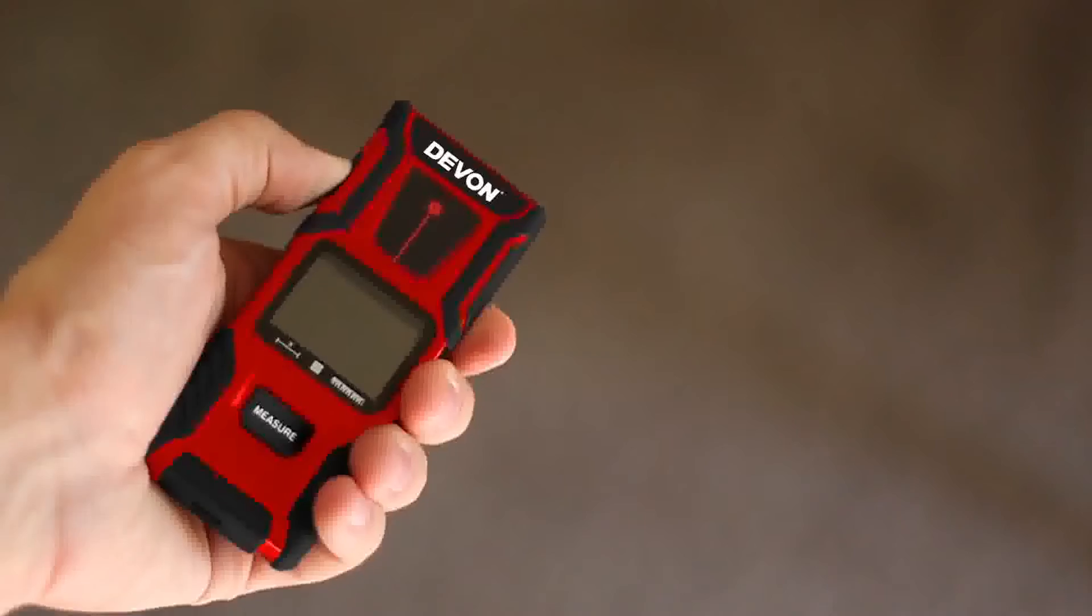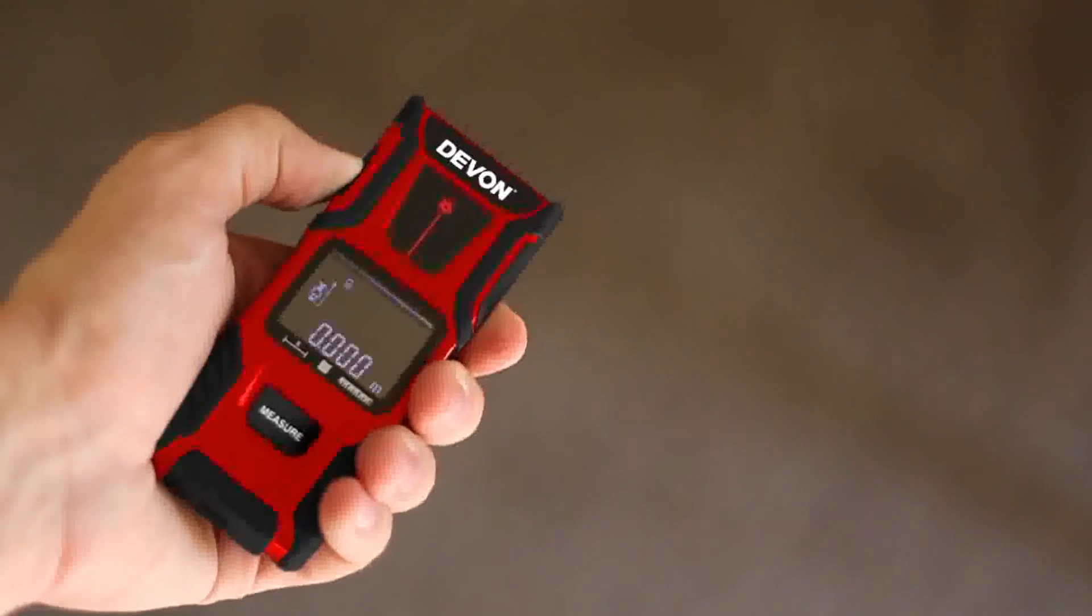To change between standard and metric units, press and hold the power button while turning on the device.